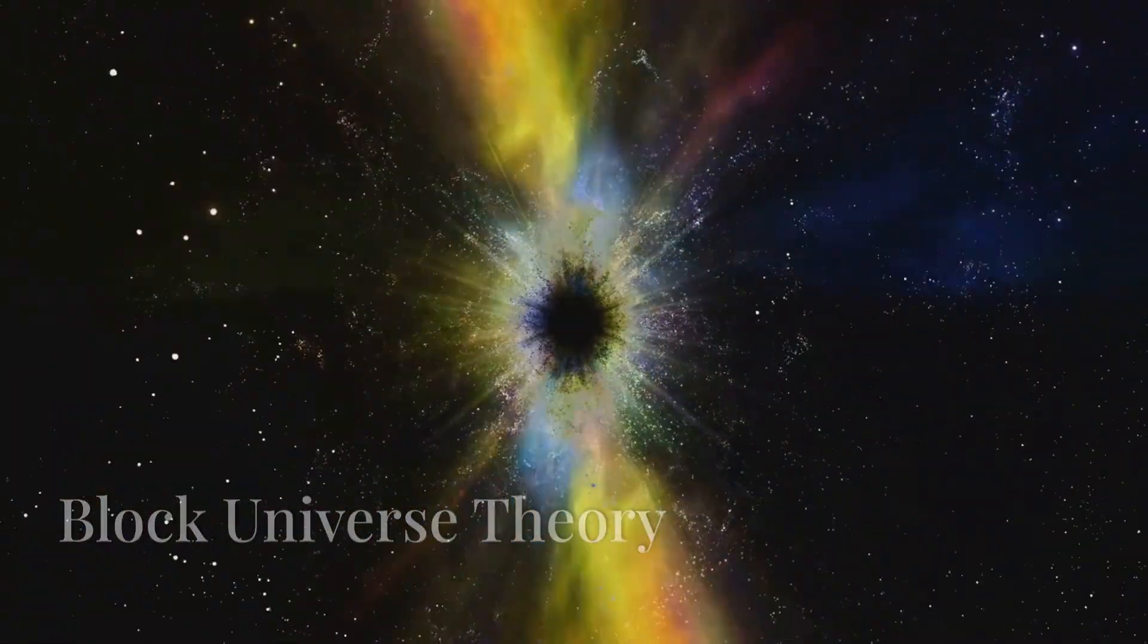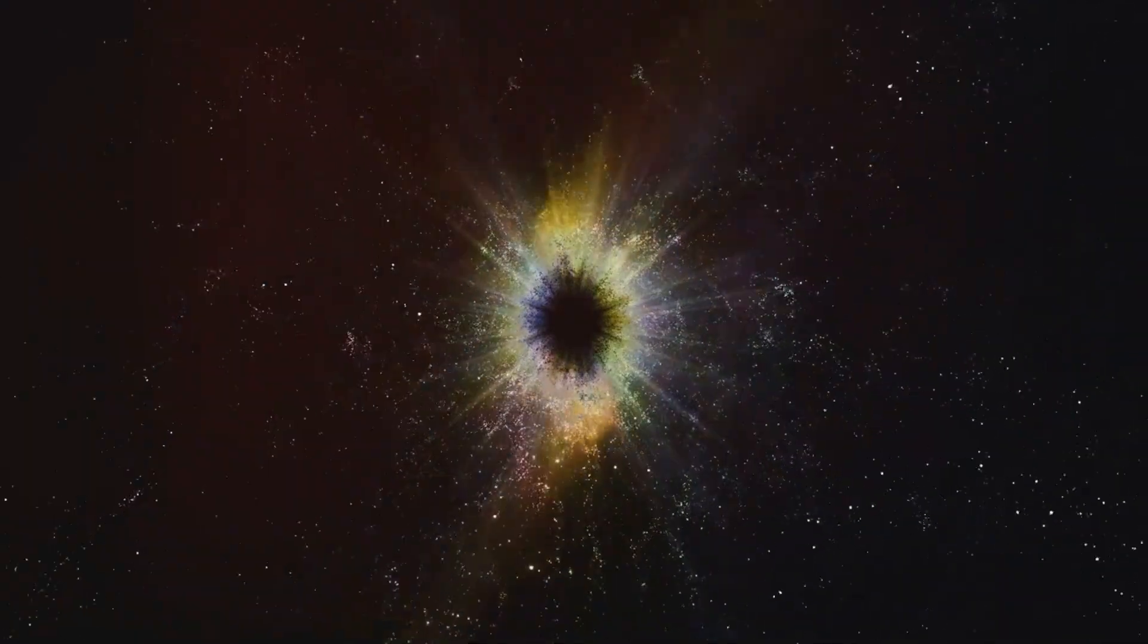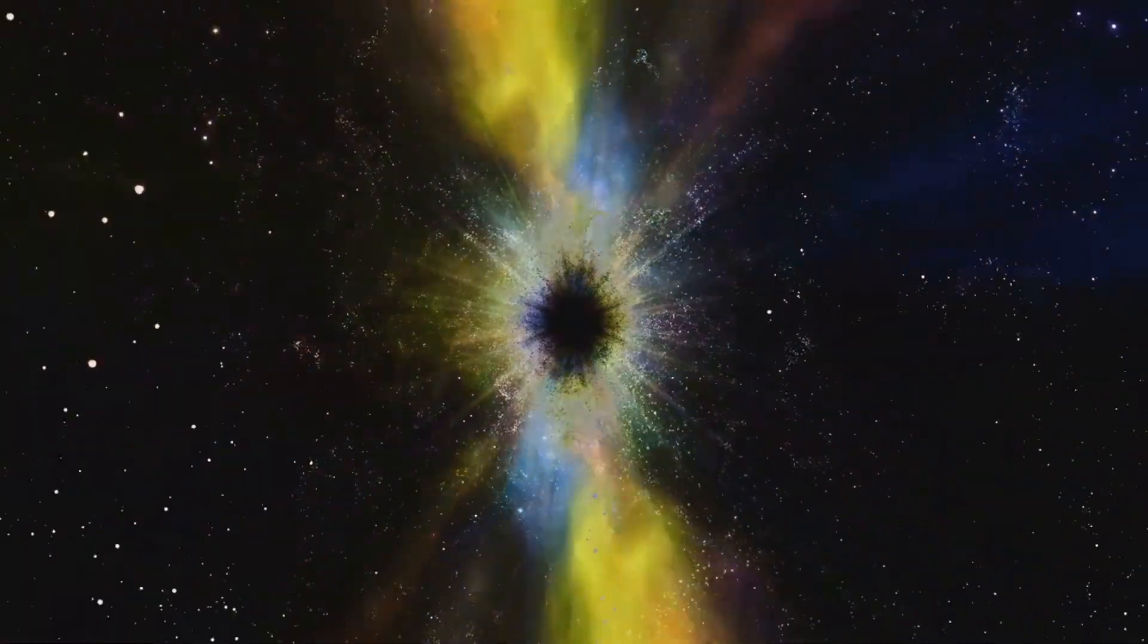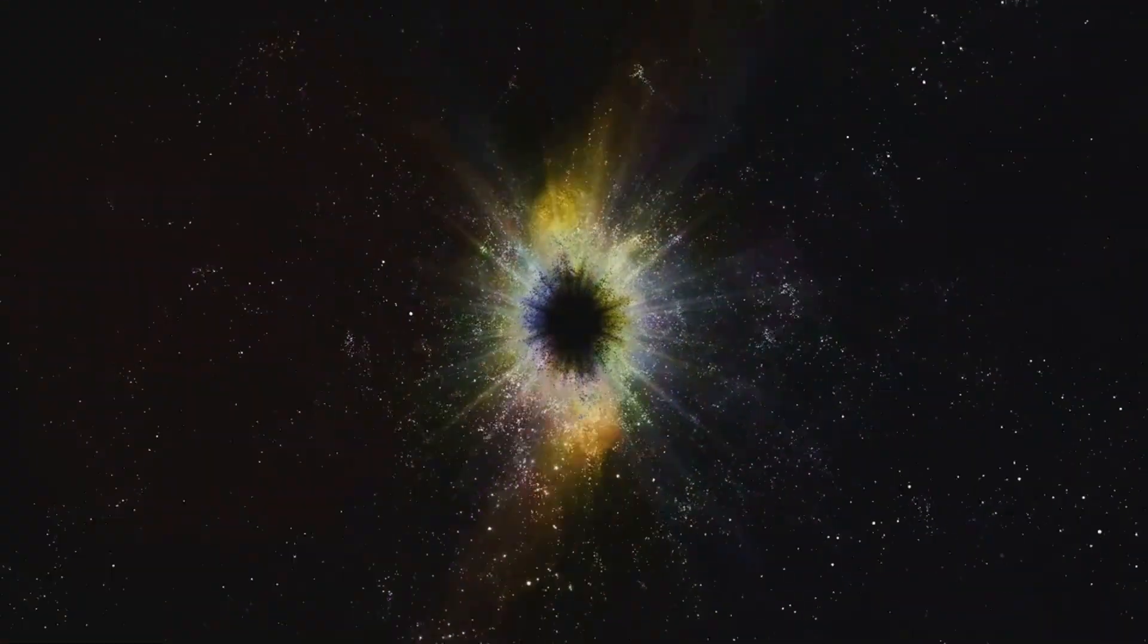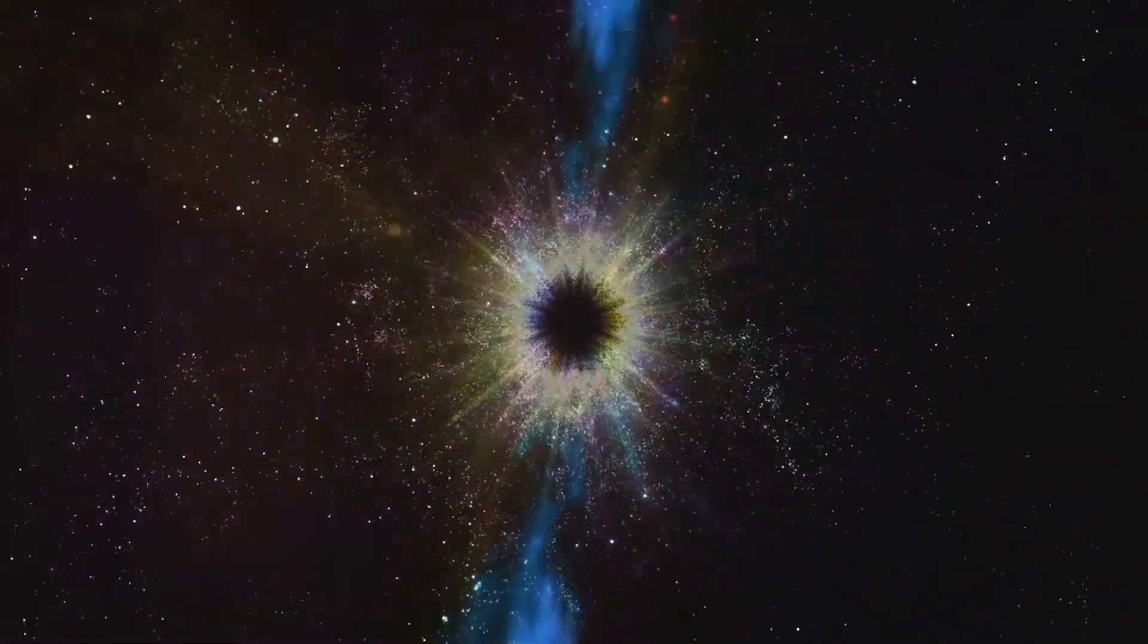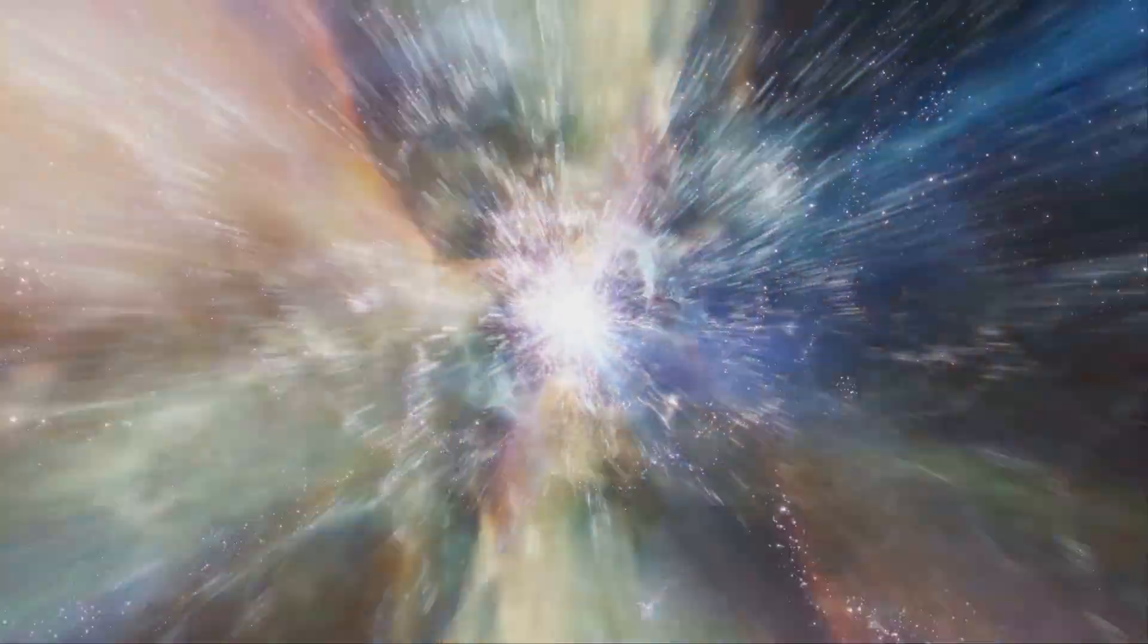All right, let's break down what the block universe theory is all about. The block universe theory suggests that the past, present and future all exist simultaneously. Imagine the universe as a giant block of space-time, where every event that has ever happened or will ever happen is fixed in this block. In this view, time doesn't flow like a river. Instead, it's just another dimension, much like the dimensions of space.